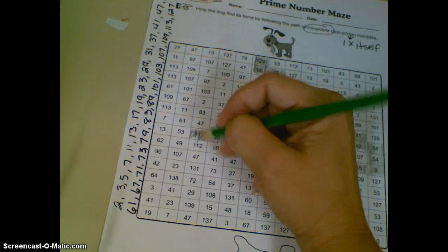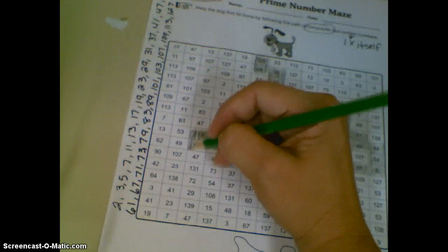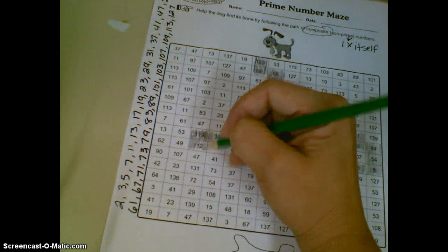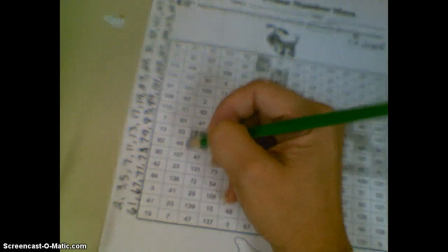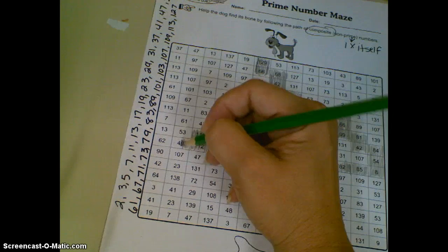And then we can find our next even one right down here, 112. And now we don't have any even ones to look at, but I bet you recognize this one. 7 times 7 is 49.